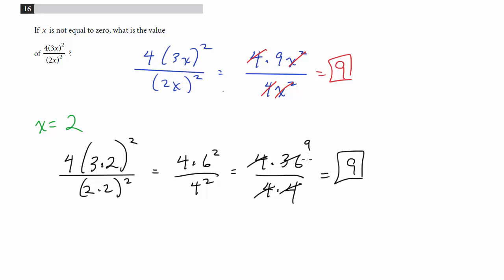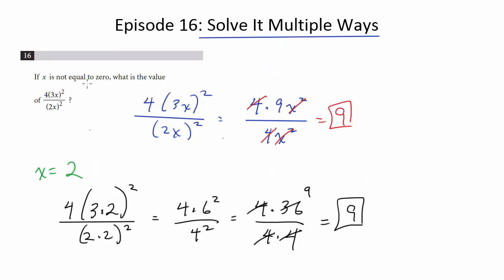Now, that was a simple example. Even though this is a number 16, allegedly one of the hard problems of the section, it's really not that bad. But it just goes to show you, and this lesson could be applied to other questions as well, that the more ways you can solve a question and get the same answer, the more you maximize your chances of not making a mistake and actually getting the question right.